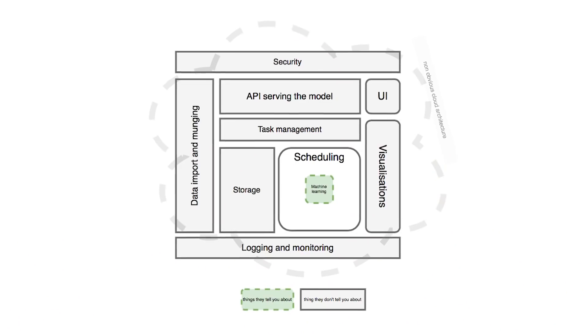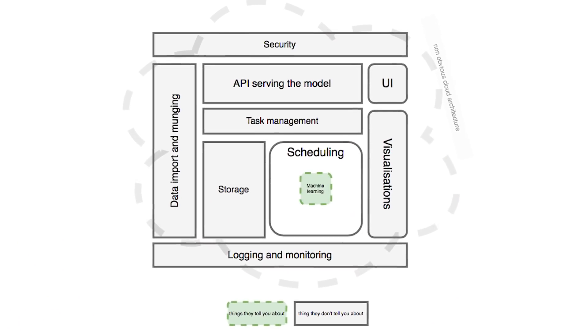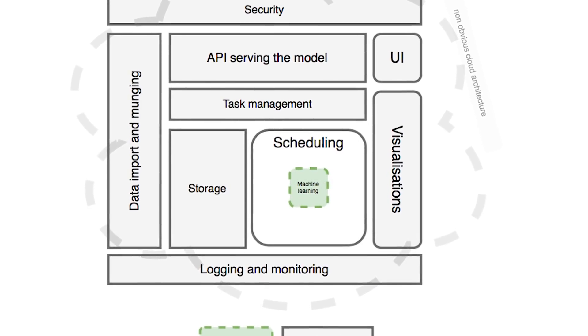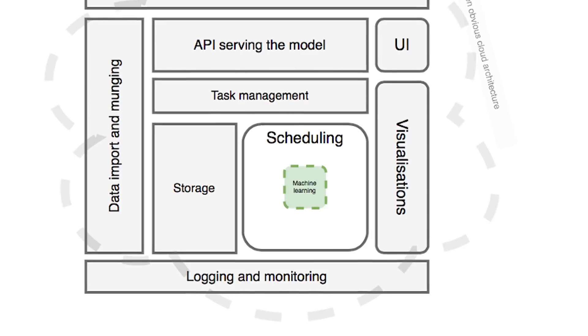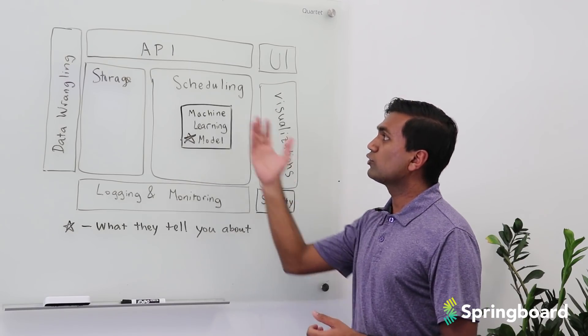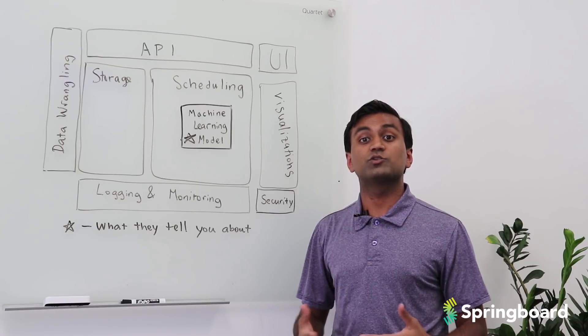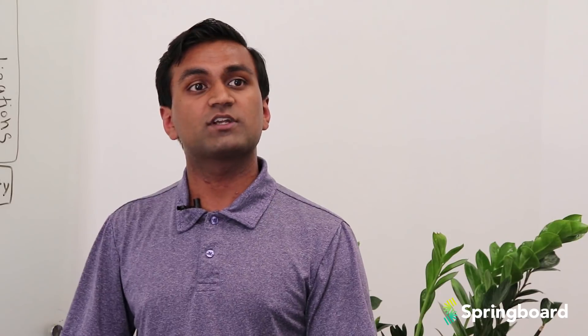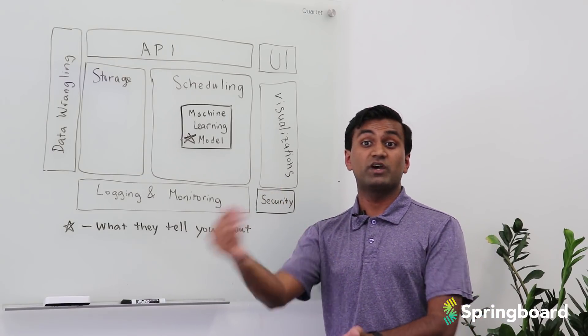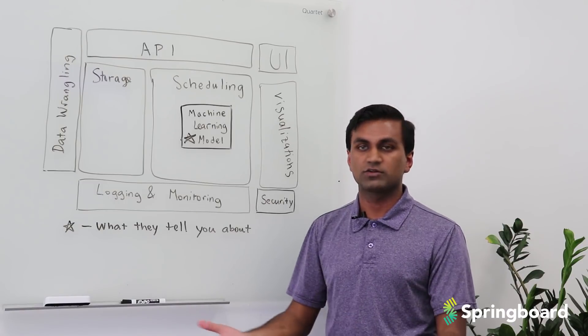Closely related is scheduling. Scheduling is related more to when you might want to train or retrain your model. As time goes on, your ML model becomes less performant as your training data might actually change. And so you might want to determine, when am I going to reschedule this machine learning model? Is it going to be done on a time series based? Or is it going to be done when the model performance, which can be measured day over day, decreases over time?